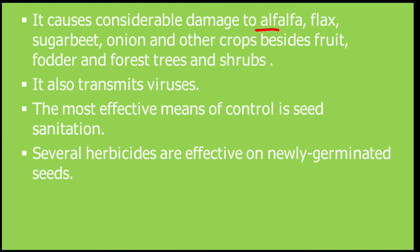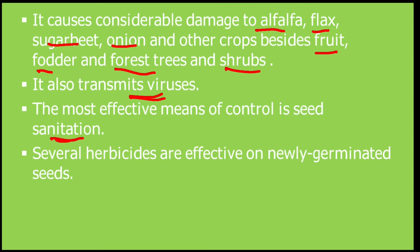Cuscuta causes considerable damage to alfalfa, flax, sugar beet, onion, and other crops such as fruits, fodder, forest and shrubs — it infects almost all plants. It also transmits viruses from one host to another. The most effective means of control is seed sanitation — using seeds that do not contain Cuscuta seeds. Several herbicides are also effective on newly germinated seeds.